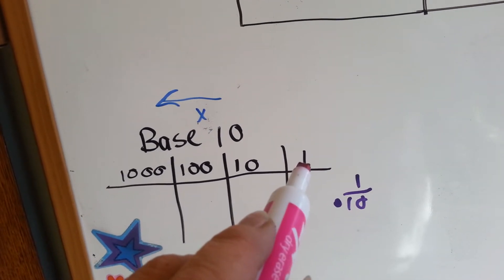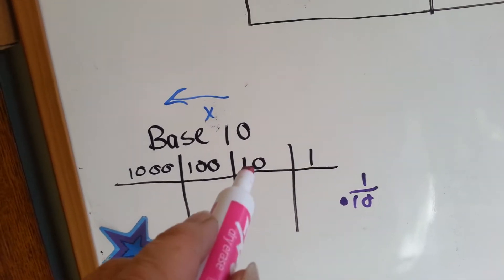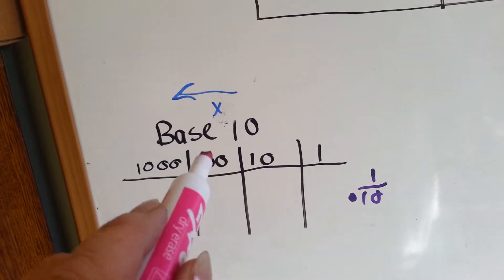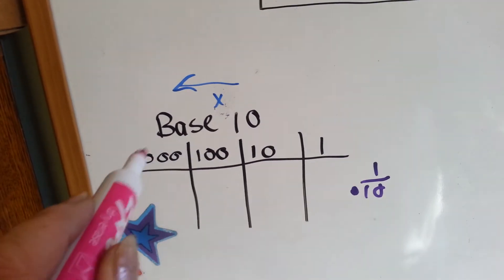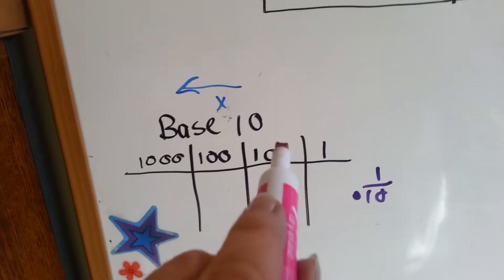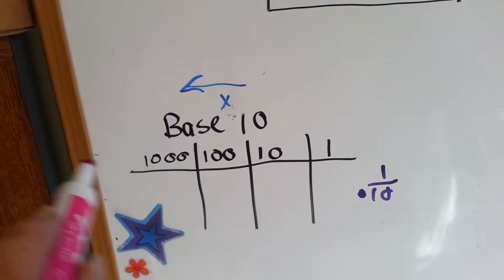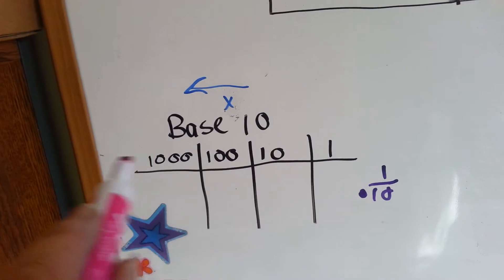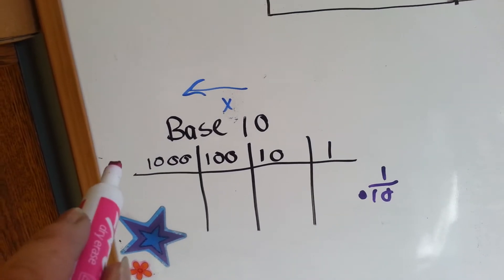So 1 times 10 is 10, 10 times 10 is 100, 100 times 10 is 1,000, and we just keep going, multiplying by 10 to get to our next place value.